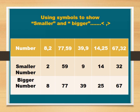39 and 9: 9 is the smaller number and 39 is the bigger number. 14 and 25: 14 is the smaller number and 25 is the bigger number. Next, 67 and 32: 32 is the smaller number and 67 is the bigger number.